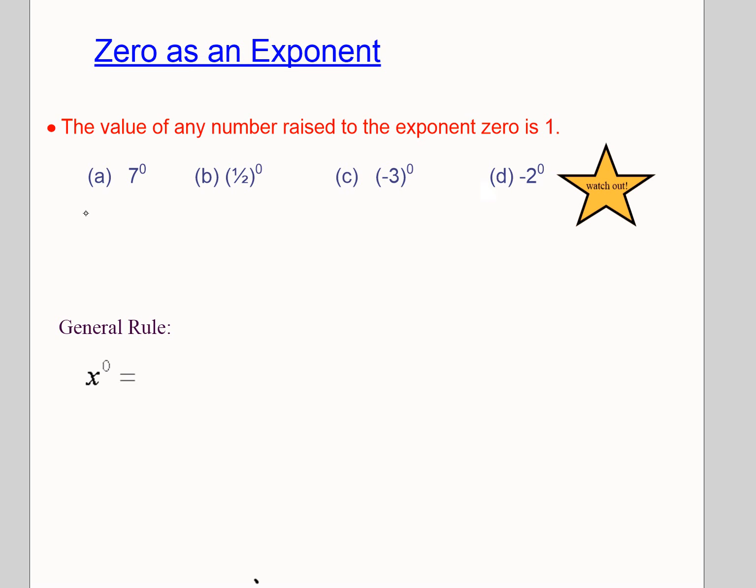So 7 to the 0 would be 1. 1 half to the 0 would be 1. Now this one's interesting because it combines some of the work we did with negative bases and what happens when there's brackets or no brackets. Remember that 0 is considered an even number. So when there are brackets and the negative gets repeated an even number of times, our answer will be positive. So this one will be positive 1.